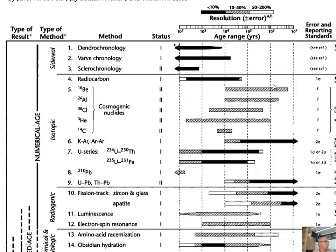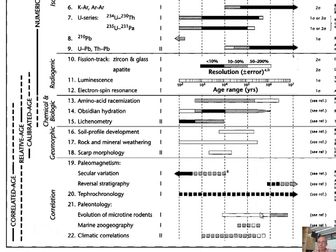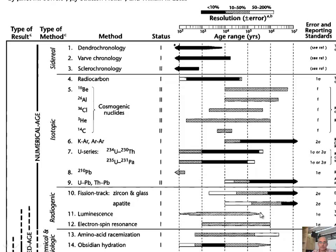Different cosmogenic methods don't go too young but can go from about 10,000 to a million years. Argon-argon is a higher-temperature method that requires enough decay to tell the difference between parent and daughter products — it doesn't work well below about 10,000 years. Luminescence methods are being experimented with at very young ages and can go as far as 100,000 to 300,000 years.